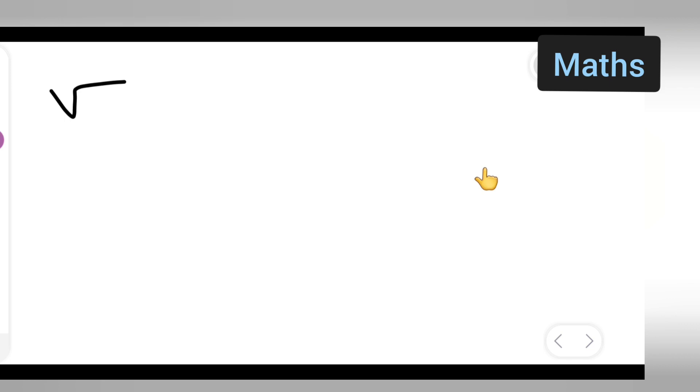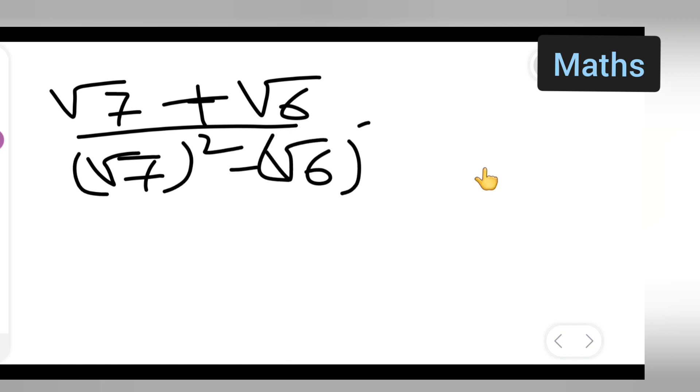So we will get root 7 plus root 6. Then it will be root 7 square minus root 6 square. Here what is going to happen is the square will get cancelled with the root.